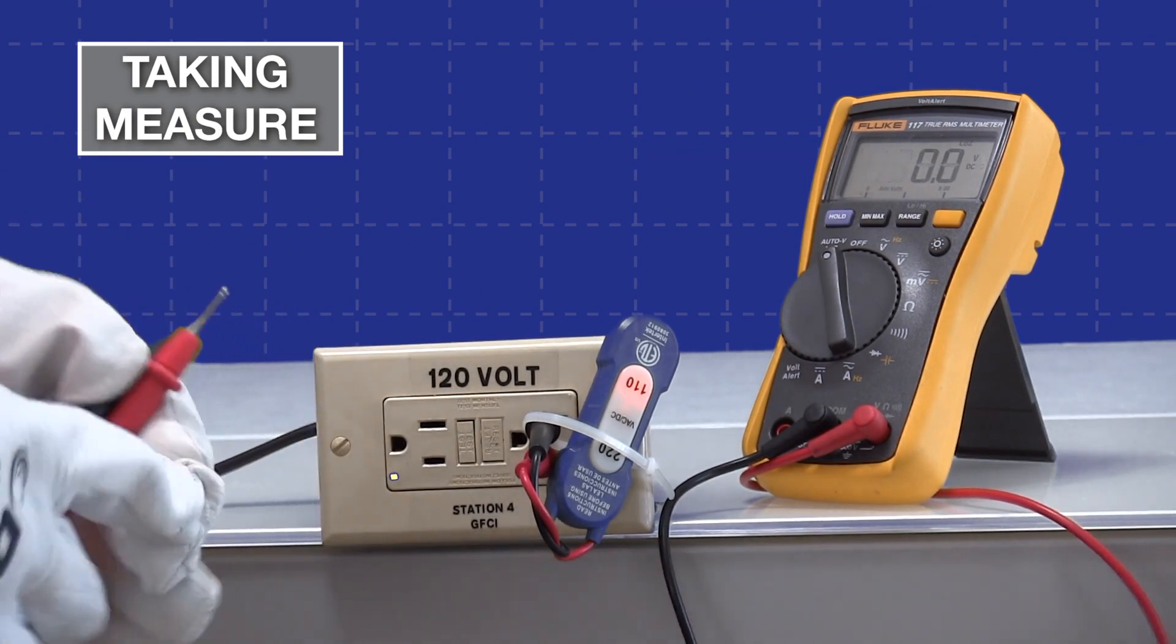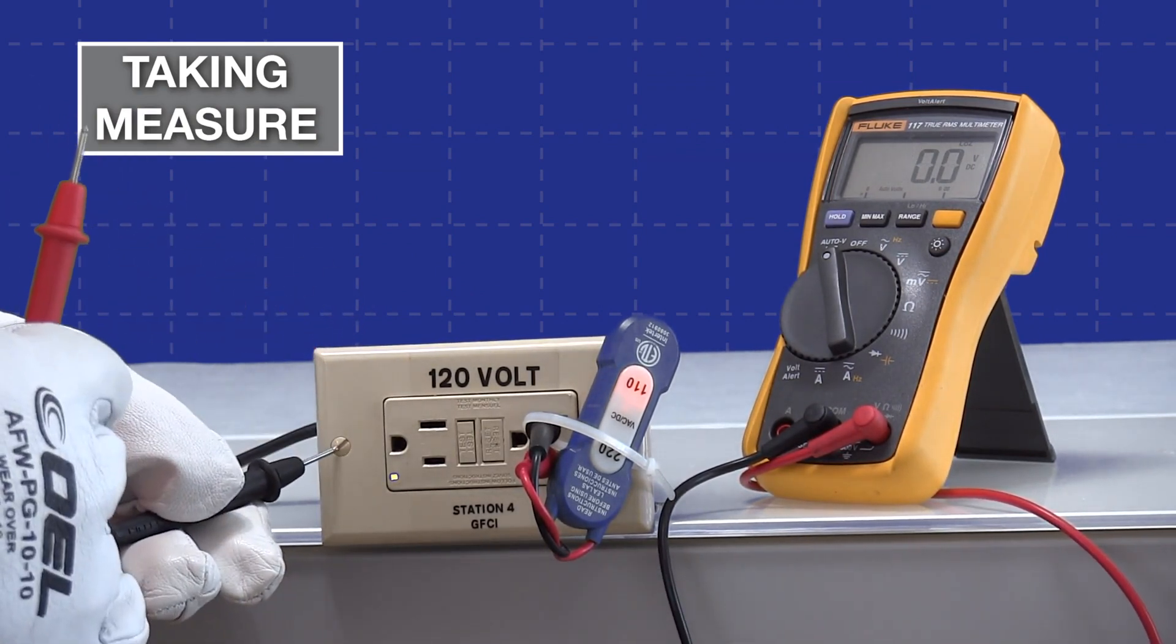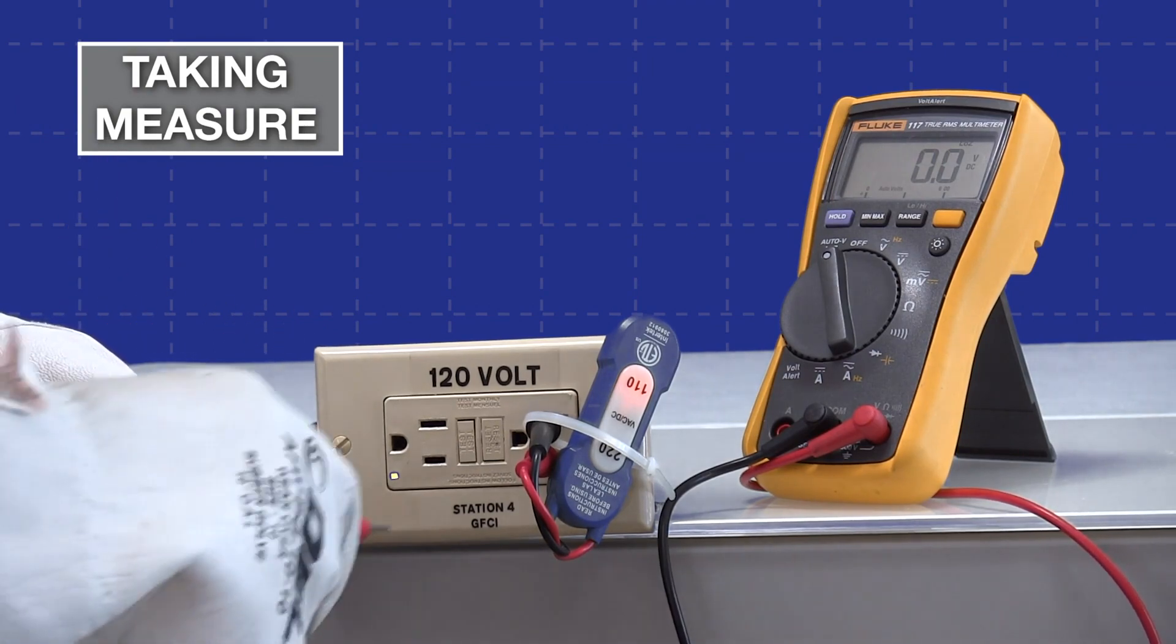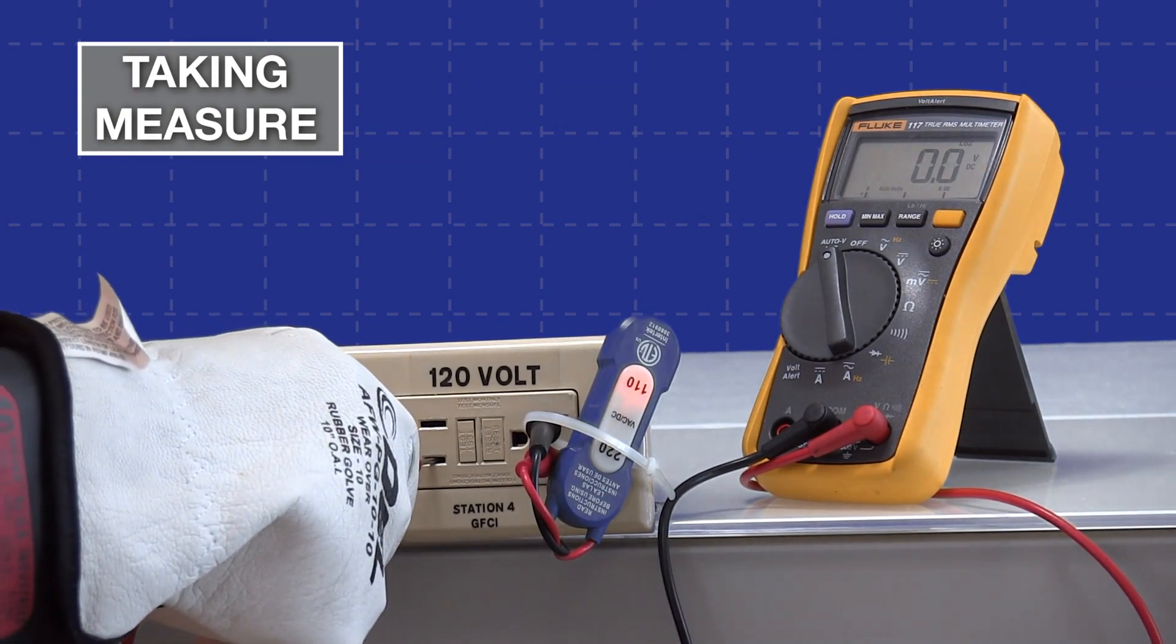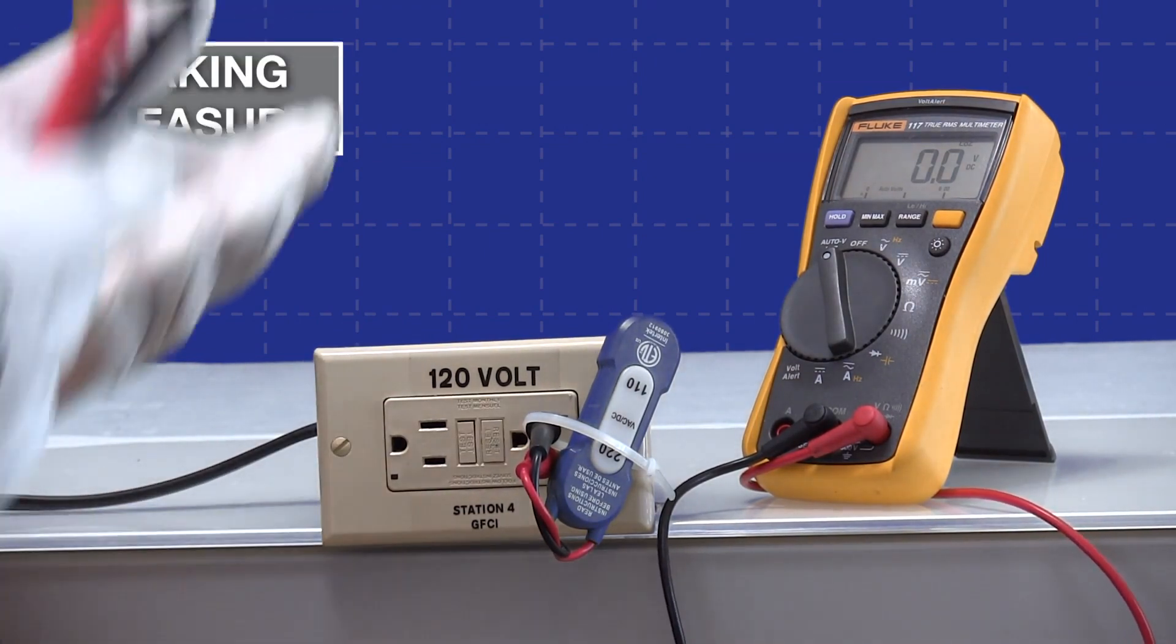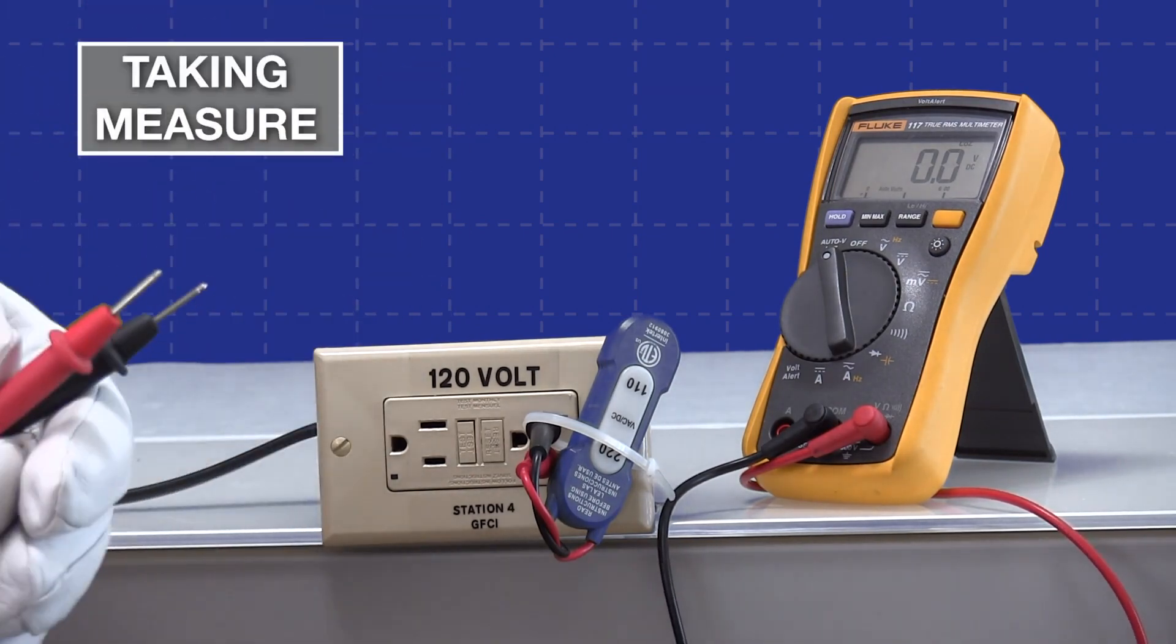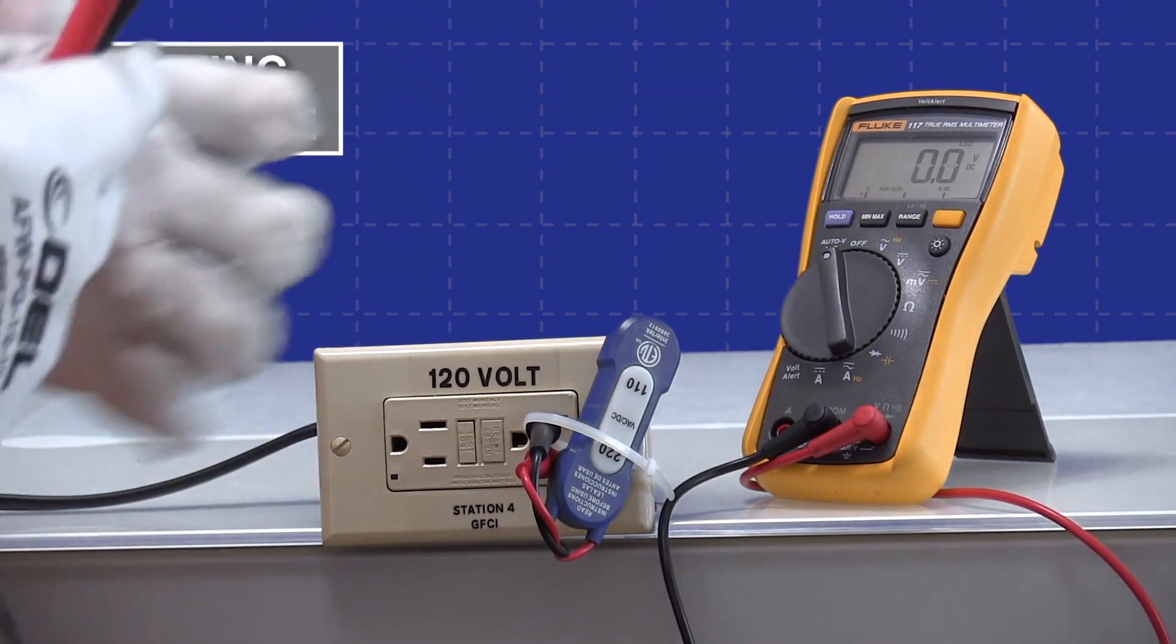Now we'll try to measure to the ground again. I'll put the probe on ground first, and then go to the ungrounded conductor, and you'll notice the light went out. We tripped the circuit. That's because the low impedance drew enough current, it impacted the circuit, and tripped it out. That's exactly what meter loading is.